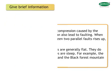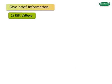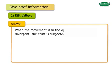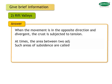Rift valleys: When the movement is in the opposite direction and divergent, the crust is subjected to tension. At times, the area between two adjoining faults subsides. Such areas of subsidence are called rift valleys. Both slopes of rift valleys are quite steep. For example, the Great Rift Valley in Africa.